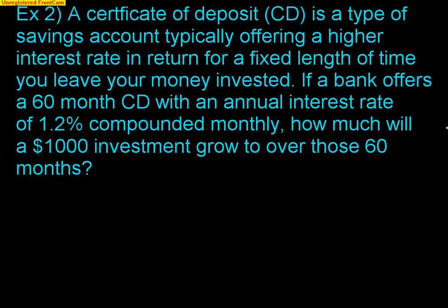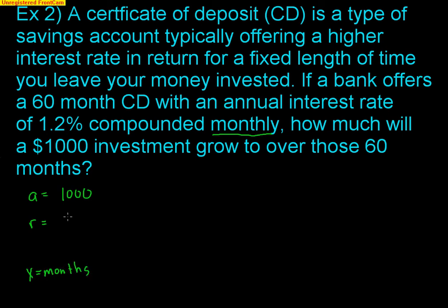A certificate of deposit, or CD, is a type of savings account typically offering a higher interest rate in return for a fixed length of time you leave your money invested. If a bank offers a 60-month CD with an annual interest rate of 1.2% compounded monthly, how much will a $1,000 investment grow to over those 60 months? A, the initial investment, is $1,000. The growth rate is 1.2% annually, but it's compounded monthly, so X is the number of months.